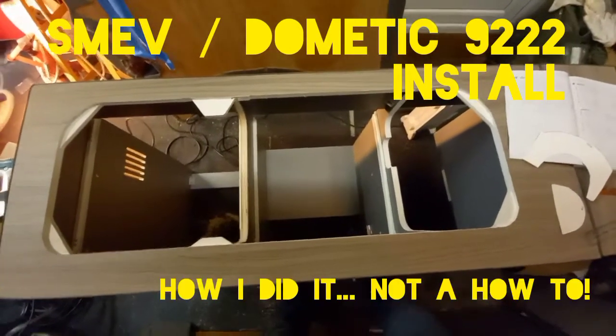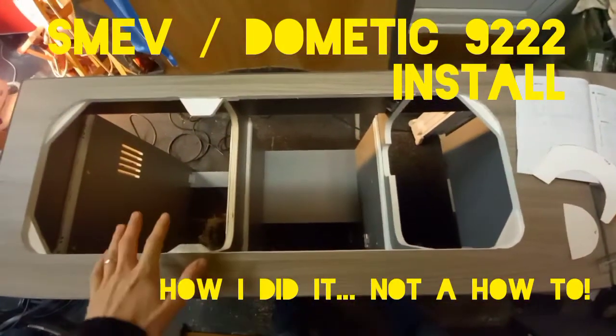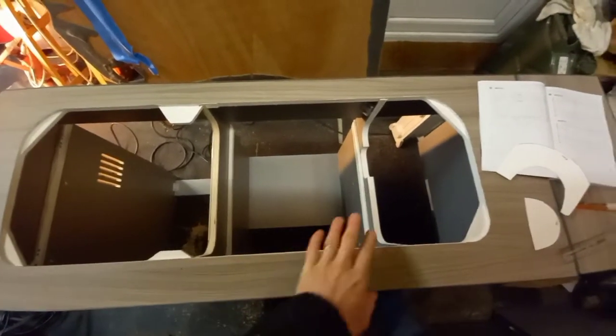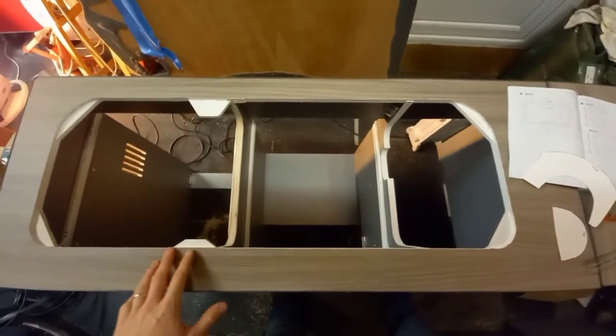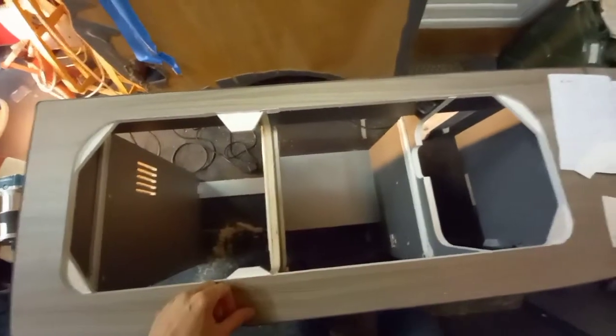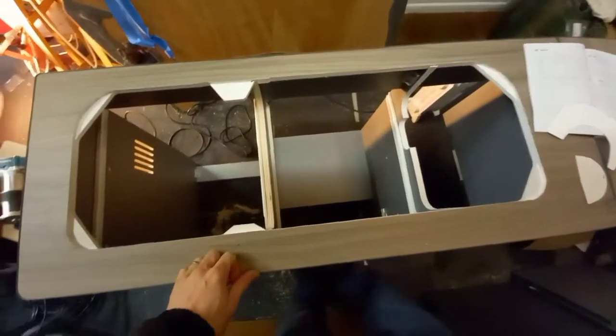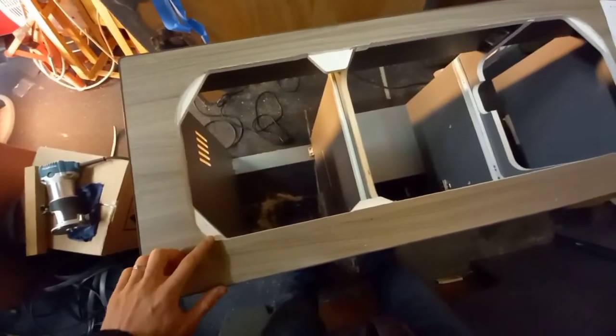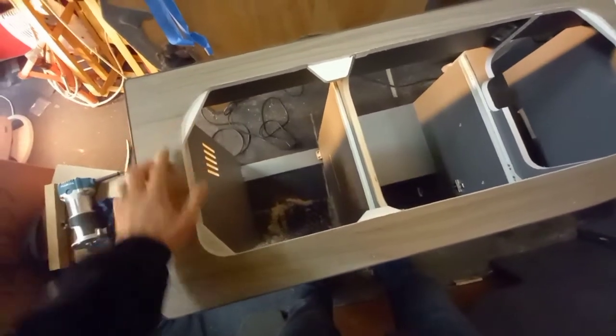I'm fitting a Smev 9222 sink and double hob combination to this worktop. This is a right-hand version. I already had a cutout in this flat-back furniture worktop, but the cutout didn't have these recesses.